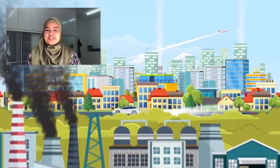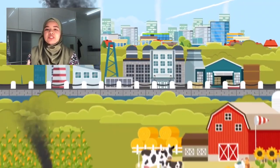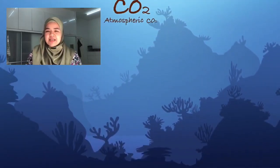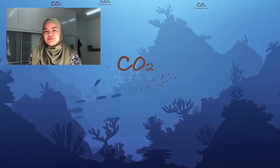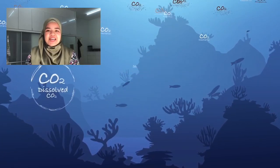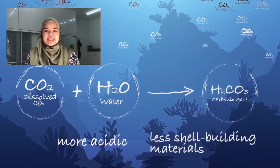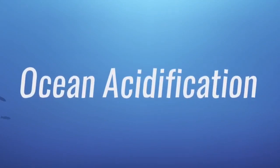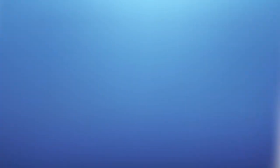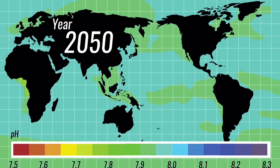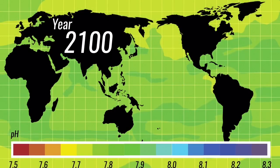Since the industrial revolution, levels of carbon dioxide in the atmosphere have continued to increase from human activities. About a quarter of these emissions enter the oceans, where they dissolve and react with water. This chemical reaction creates carbonic acid, which lowers the pH of the ocean, making it more acidic and reducing the availability of shell-building materials.